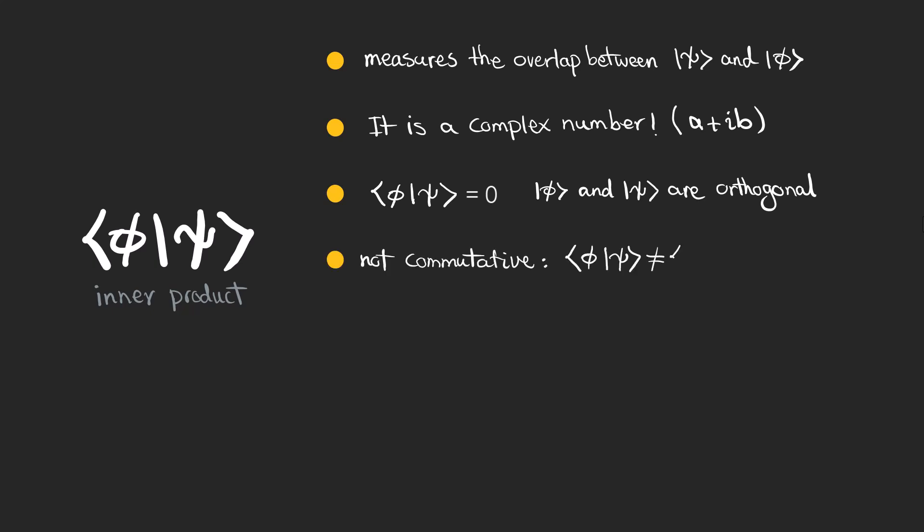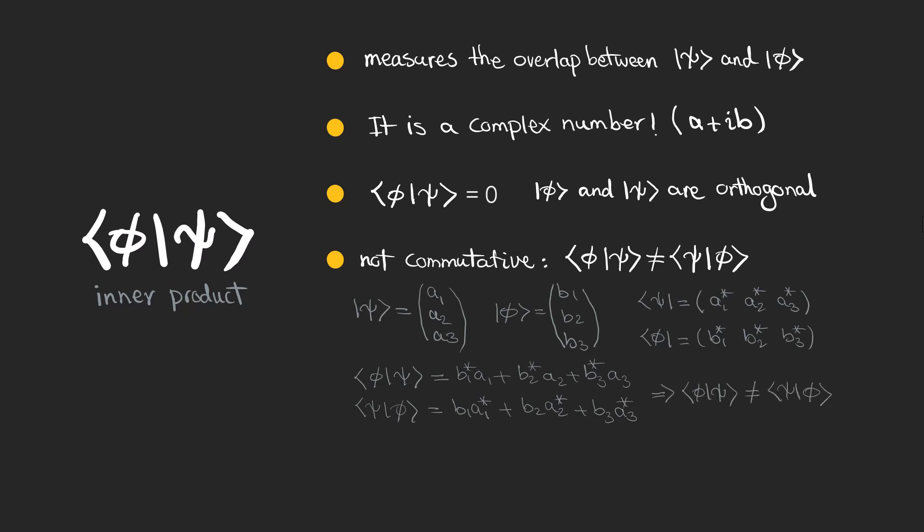Pay attention that the inner product is not commutative, because we are dealing with complex numbers, and the bra vectors contain the same elements which are complex conjugated. So it's safe to say that taking the complex conjugate of the inner product flips the two sides.